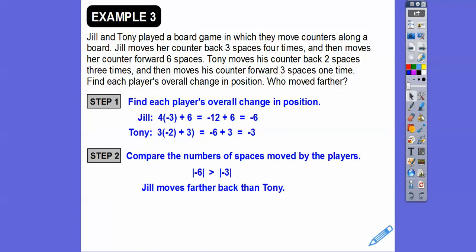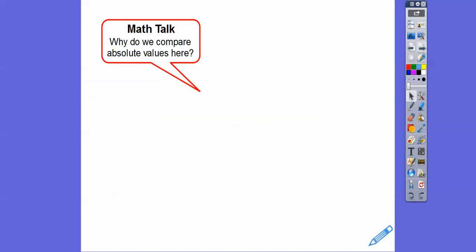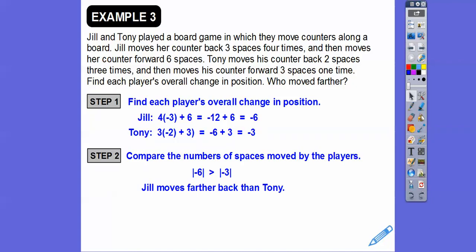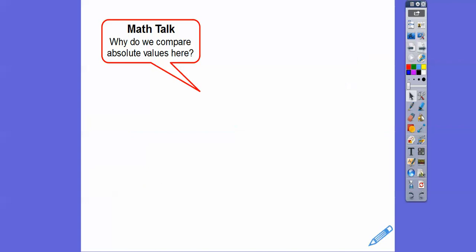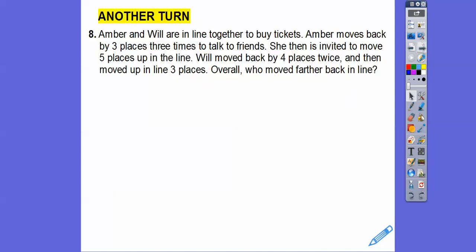Why do we compare absolute values here? Because it's talking about spaces moved back — distance is always a positive number. So we compare the absolute values of negative 6 and negative 3 to determine who moved further.